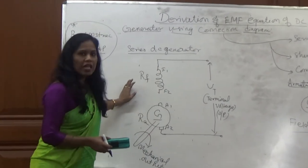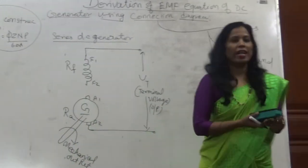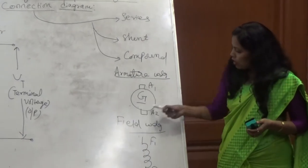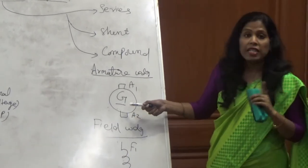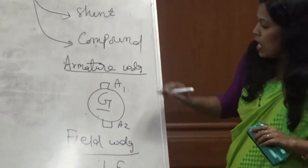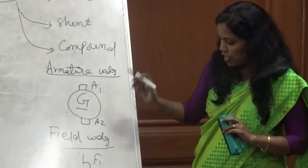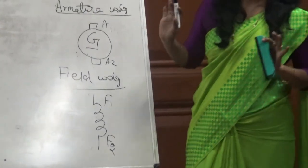Before going for this connection diagram, one should know how to draw the armature winding and field winding. Armature winding is a rotating part, so we draw a cylinder. Inside, since it is a generator, we write G, and since it is a DC generator, DC state line. Since it is armature winding, A1A. The next winding is field winding. This is stationary winding, so simple winding design, and it has F1 and F2.